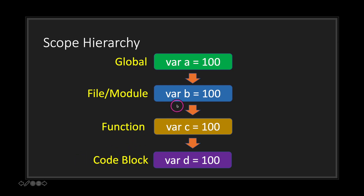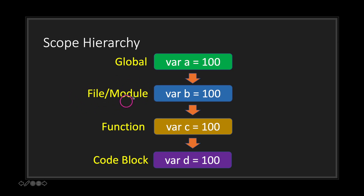Now let's look at the file module. Variable B in our file module will not propagate up — there's no arrow pointing up. This means that our global scope does not have access to variable B, or anything declared in our file module and everything beneath it.